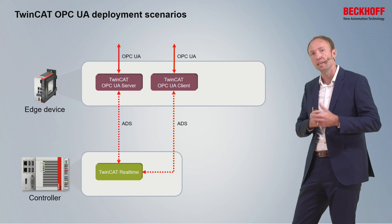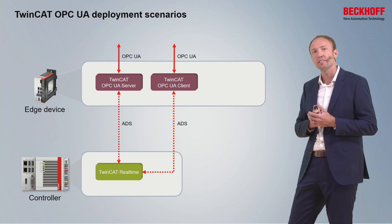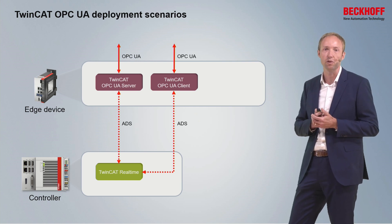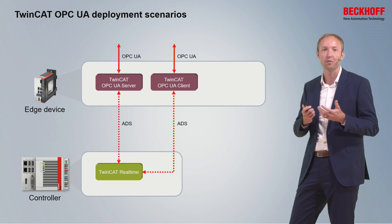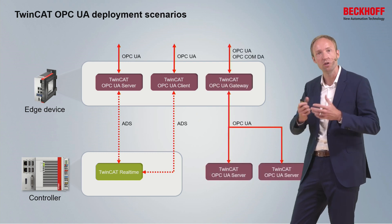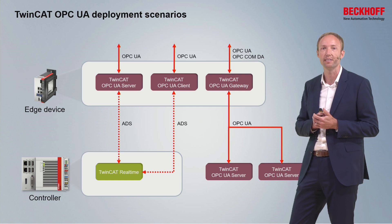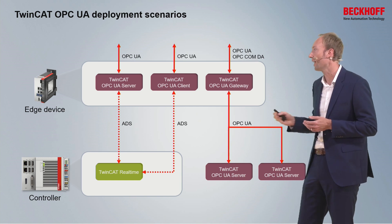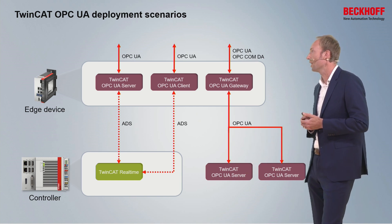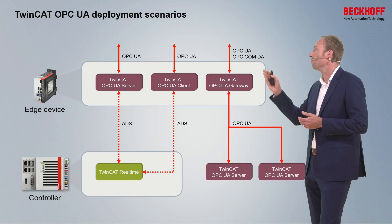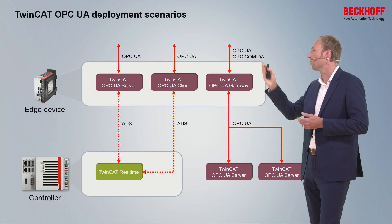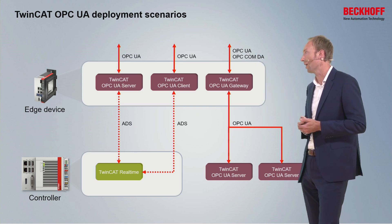This edge device scenario is particularly interesting in some network environments. The TwinCAT OPC UA gateway can also be installed on the edge device in order to aggregate multiple underlying TwinCAT OPC UA servers and make them available either via OPC COM DA or via OPC UA.